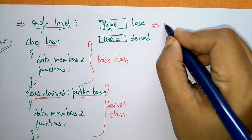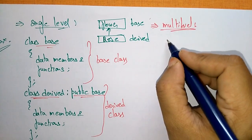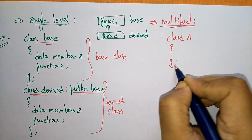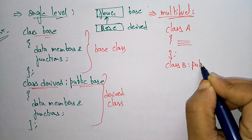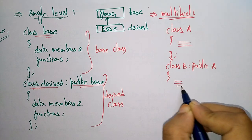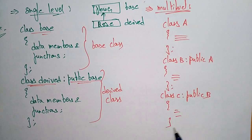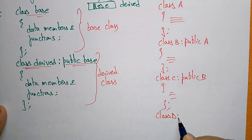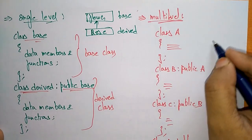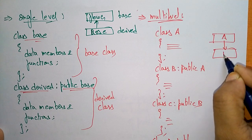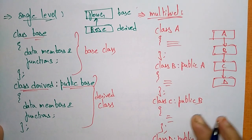Now coming to multi-level. Class A is the base class with data members and functions. Class B inherits from class A using 'public class A'. Then class C inherits from class B using 'public class B', and class D inherits from class C using 'public class C'. This is multi-level inheritance.